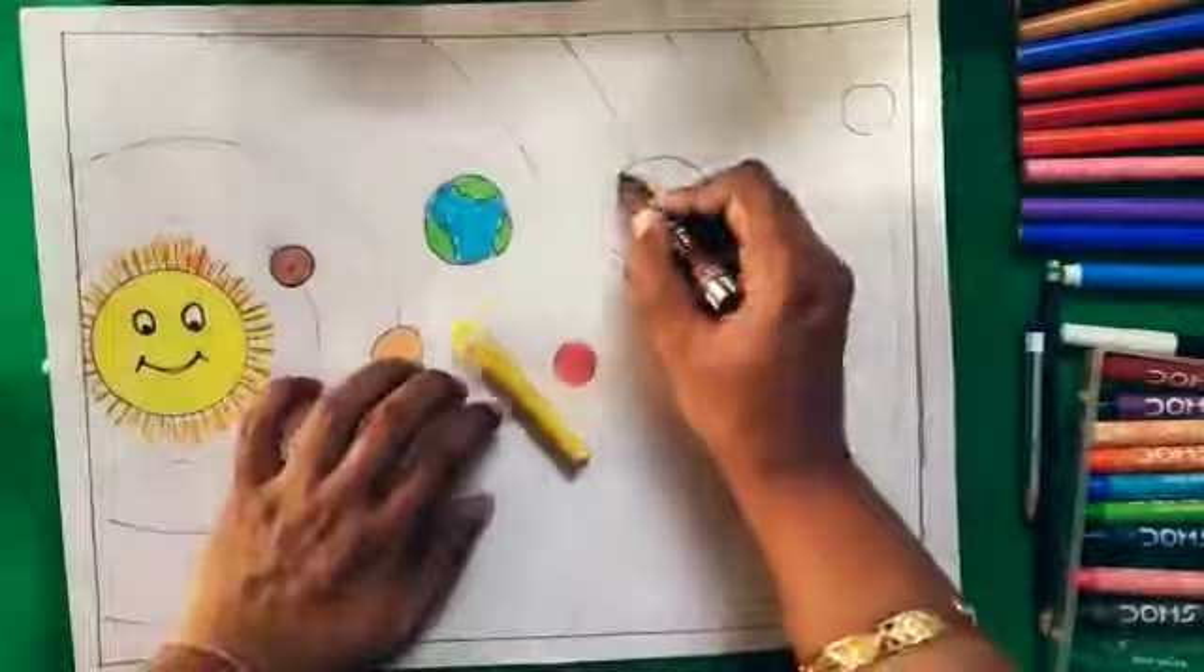For Earth, we are going to use two colors, blue and green. For Mars, I am going to use red color. For Jupiter, I am going to use brown and little yellow color.